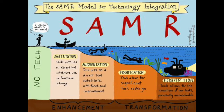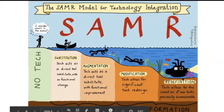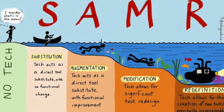This is the SAMR model, which helps us gauge to what degree we're using technology. Are we using it just as a substitution for what we used to do? Are we starting to augment the task? Are we modifying the task — meaning the tool works in a way that changes the task into something more efficient, more engaging, that fosters learning in a way that couldn't be accomplished before? Or are we getting to redefinition, where the task could never have been conceived before because we didn't have this type of tech?